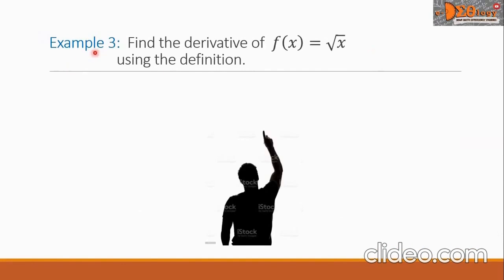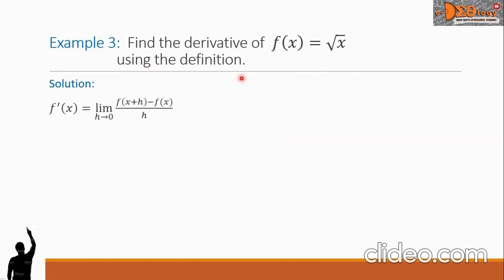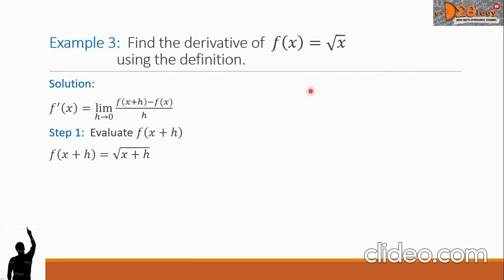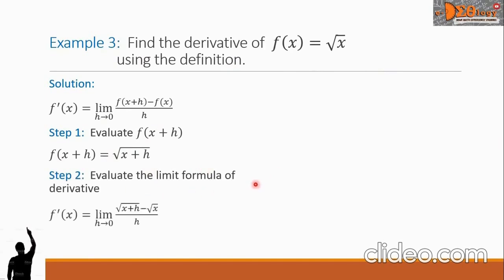Let us see example 3: find the derivative of f of x equals the square root of x using the definition. We have our formula, and step one gives us f of x plus h equals the square root of x plus h. For step two, we write the limit of the square root of x plus h minus the square root of x, all over h as h approaches 0. Let us now simplify this fraction.